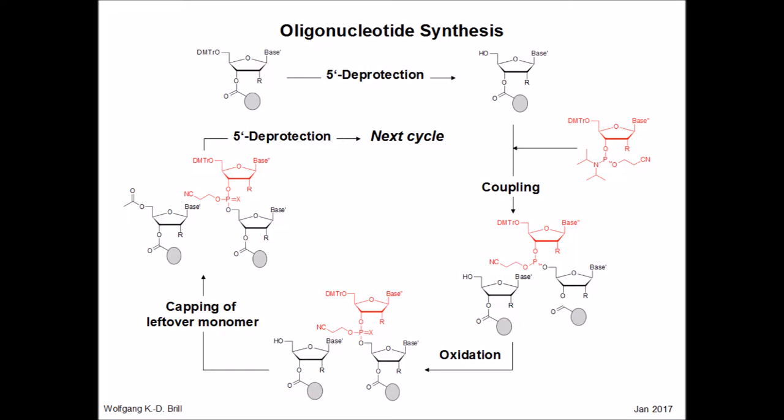As you may now see, looking at the left part of this slide, there is a dinucleotide with a 5'-dimethoxytrityl group, very similar to the mononucleoside we had in the first cycle. The next cycle can then begin with deprotection of the 5'-hydroxy function, subsequent coupling, oxidation, capping, and so on, until the oligonucleotide is synthesized. The part of the oligonucleotide synthesis where recycling technology could be implemented is where most valuable wastes are generated.